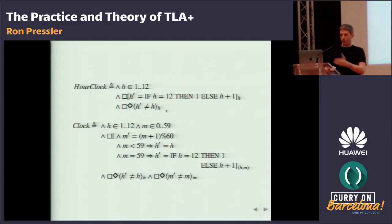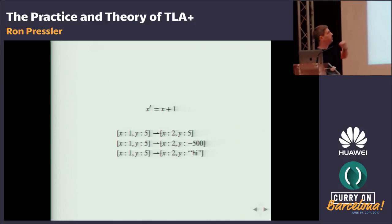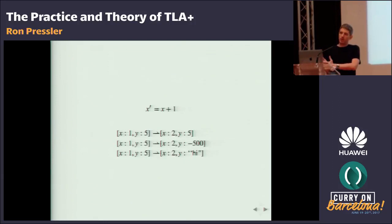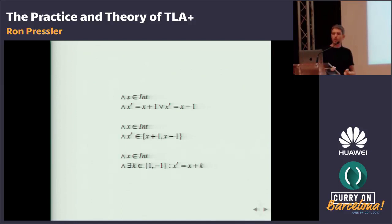Because an action doesn't mention a variable, that variable can do whatever it wants — this is non-determinism. Every TLA formula exists in the same universe and only determines the variables it mentions; any variable not mentioned can take any value. We can have more controlled forms of non-determinism: for example, an action saying that in the next state X can either be incremented or decremented — written as X' ∈ {X-1, X+1}, or equivalently, 'there exists a k in {-1,1} such that X' = X + k.'